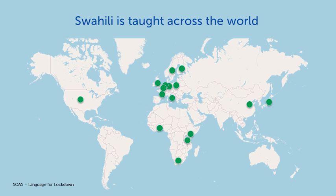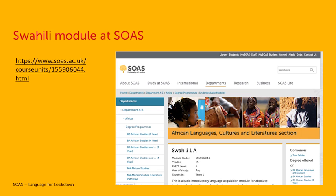This takes us beyond East Africa and shows the global spread of Swahili. These are some countries where Swahili is taught at university level — we have Swahili teaching in North America, many places in Europe, in China and Japan, in Asia, in East Africa of course, but also in Africa beyond East Africa, for example in Ghana and South Africa. We also teach Swahili at SOAS. Here's a snapshot of our Swahili 1A module — it remains our most popular African language and one of our most popular languages across the school, with several teaching modules and a lively research environment.